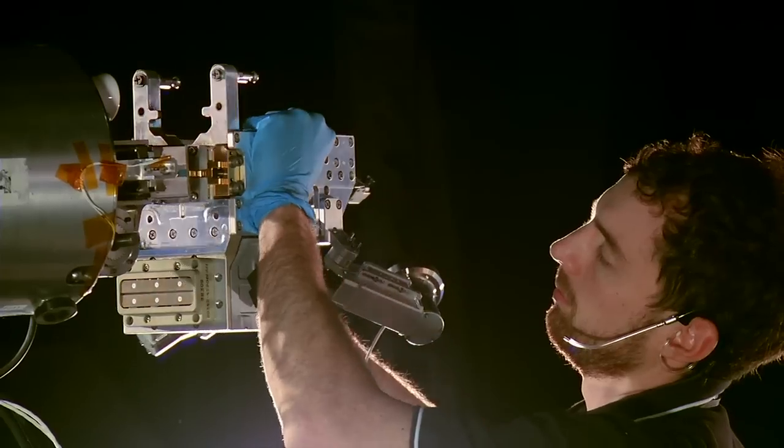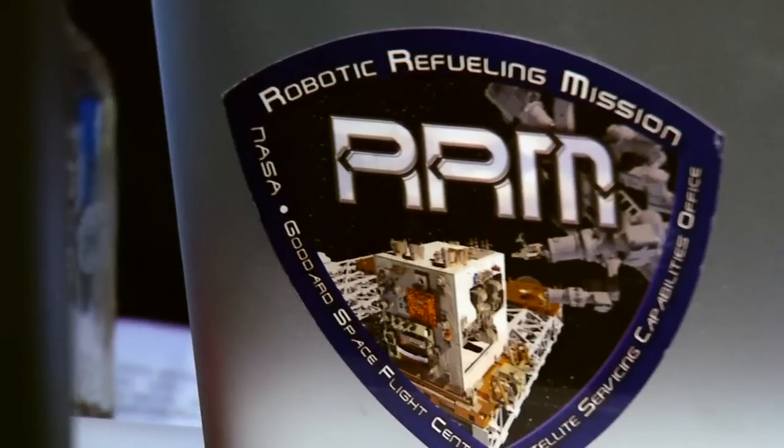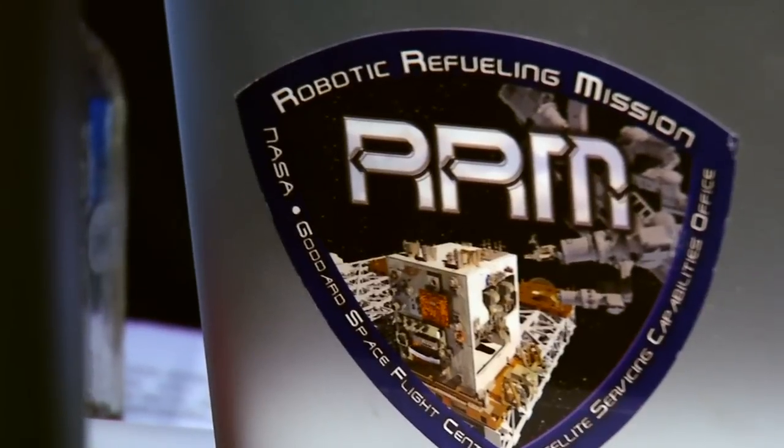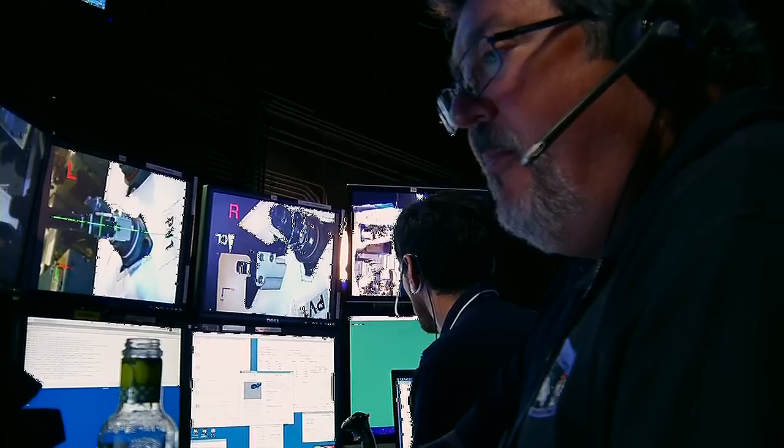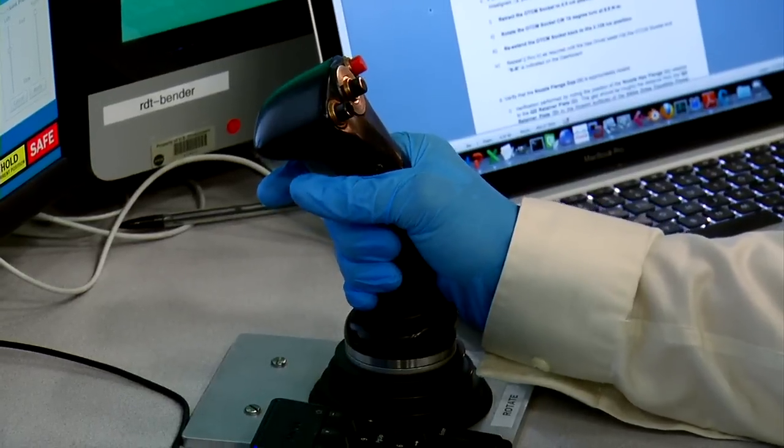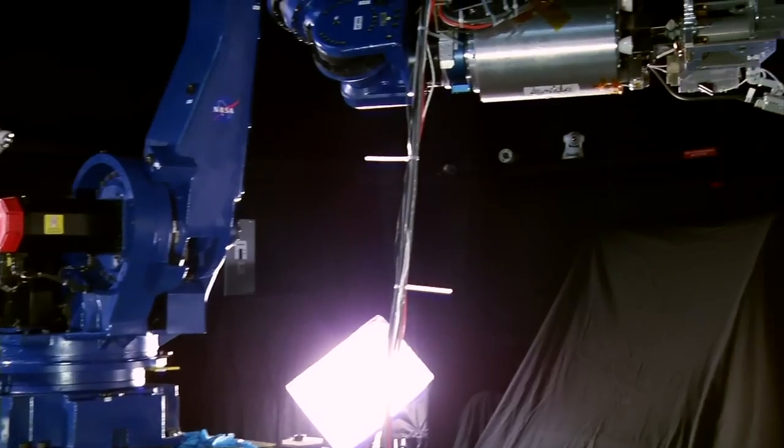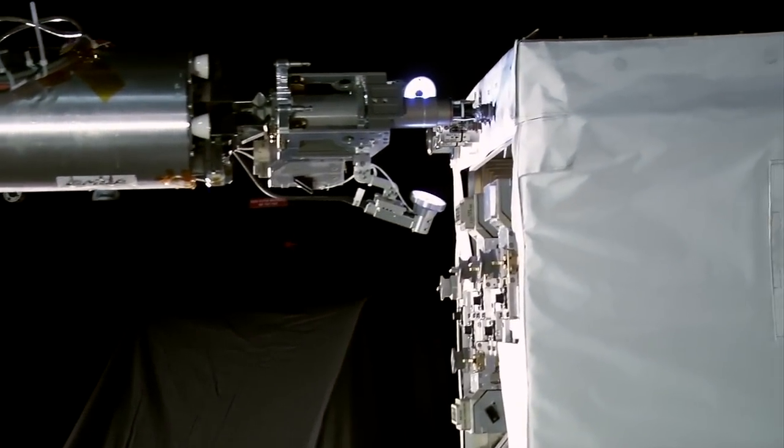Just like performing at Carnegie Hall, satellite repair missions demand rigorous practice. And the big practice session on deck is called Robotic Refueling Mission, or RRM. At Maryland's Goddard Space Flight Center, mission planners use a motion simulation platform to figure out how to get all the parts working together.